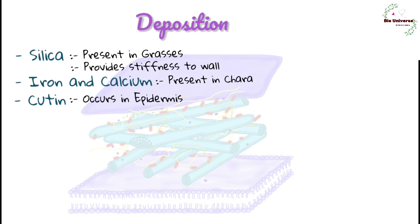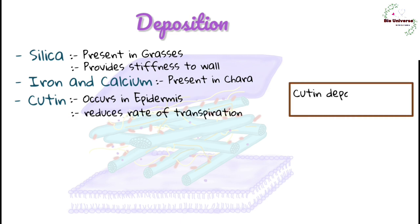Cutin occurs in outer epidermal walls of land plants. Along with wax, cutin forms cuticle a distinct layer on the surface of leaves and other soft parts of plants. It reduces rate of transpiration. Its deposition is called cutinization.